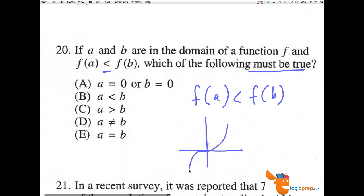I don't know whether the function looks like this, and a is here, and b is here, further out, or vice versa. I really don't know anything. I just know that when I plug in the x value of a, it's less than the x value of b.